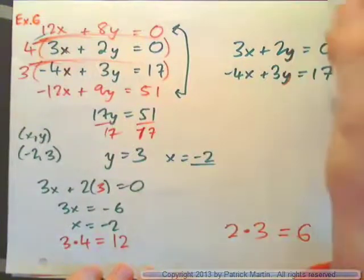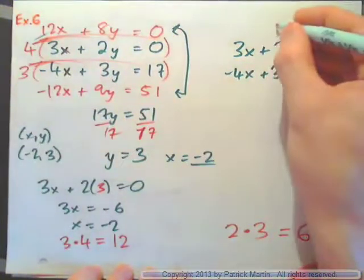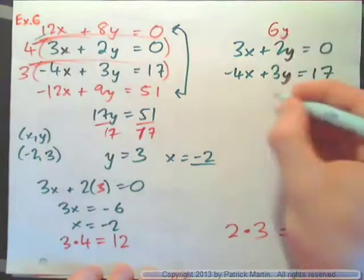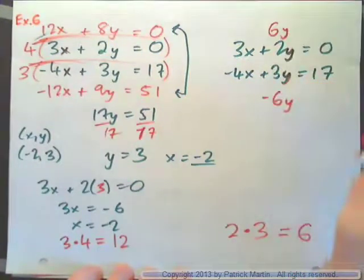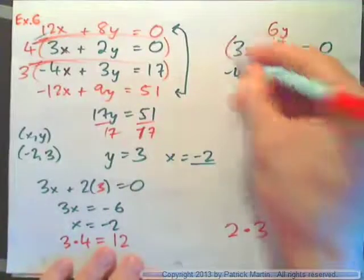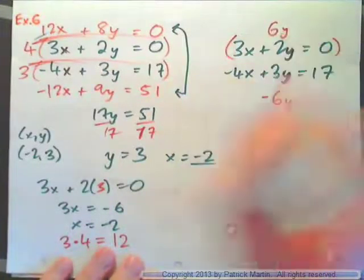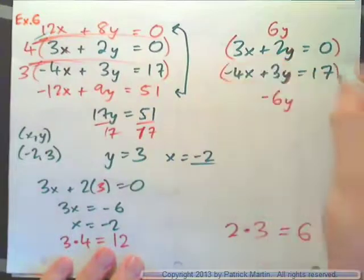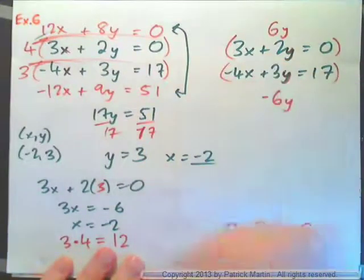But we would need a positive 6y, for example, and negative 6y, wouldn't you? Because you have to have positive and negative in order for them to eliminate. So what do you multiply this by so that this is positive 6y? What do you multiply this by so that this is negative 6y?